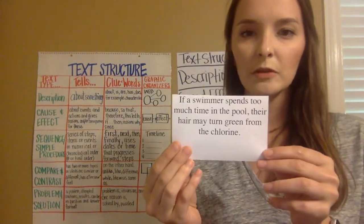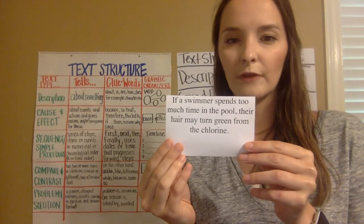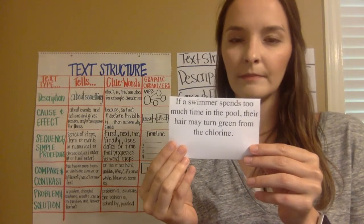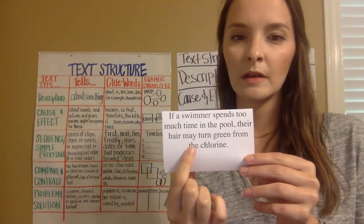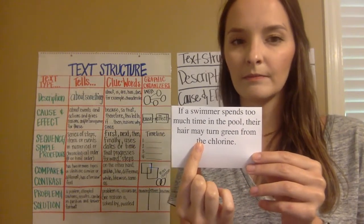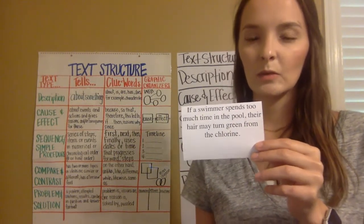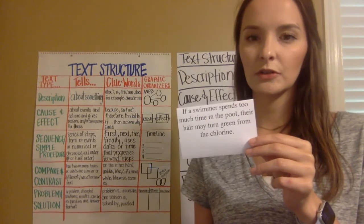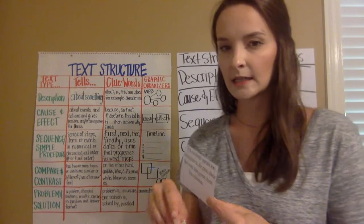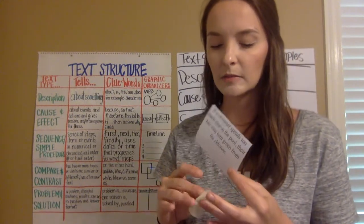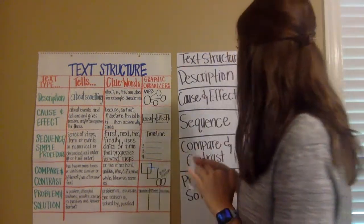Next card: If a swimmer spends too much time in the pool, their hair may turn green from the chlorine. Because the swimmer spends too much time in the pool, their hair turns green — it makes something happen. So this text structure is cause and effect. Because the swimmer spends too much time in the pool, the effect is their hair turns green.